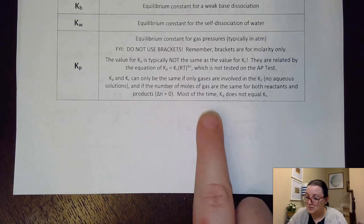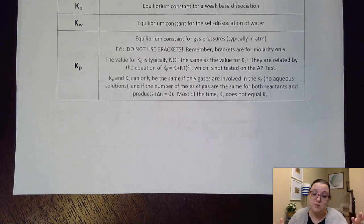I will tell you this though, KP and KC can only be the same if there are only gases involved, so there's no aqueous solutions or anything like that, and also if the number of moles of gas are the same for both reactants and products, meaning the change in the number of moles is zero. Because what that would do is back up here, if your change in the number of moles is zero, that would eliminate this term of RT. And so therefore, KP would be equal to KC. However, I'll be honest with you. Most of the time, the two are not equal to each other.